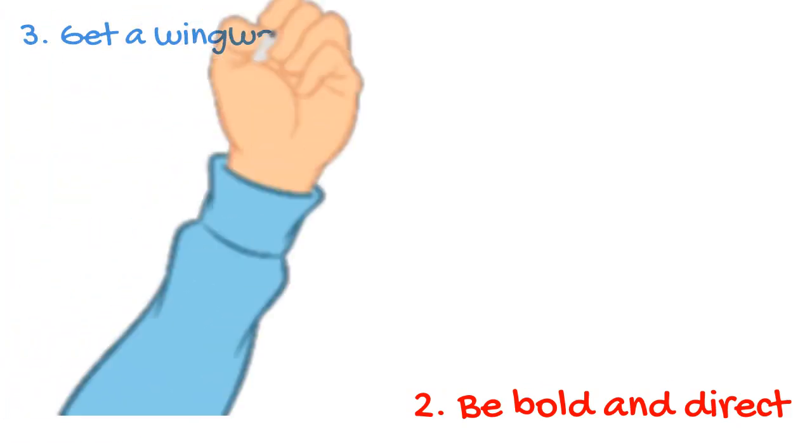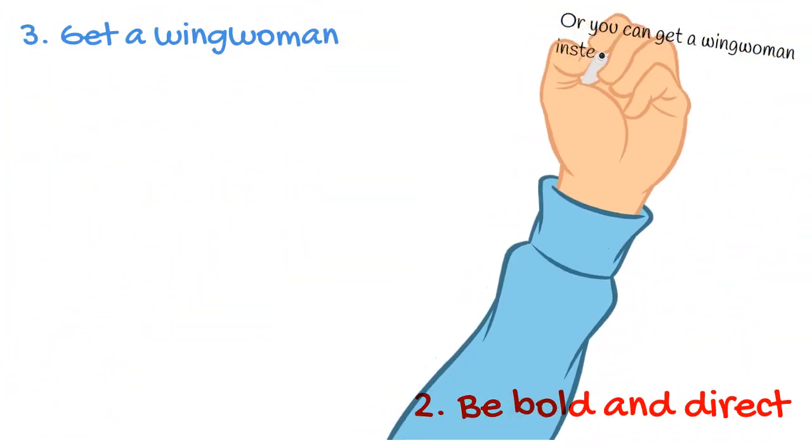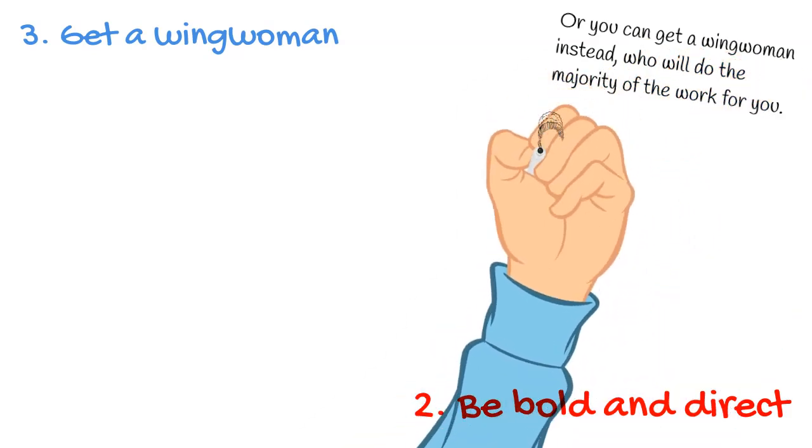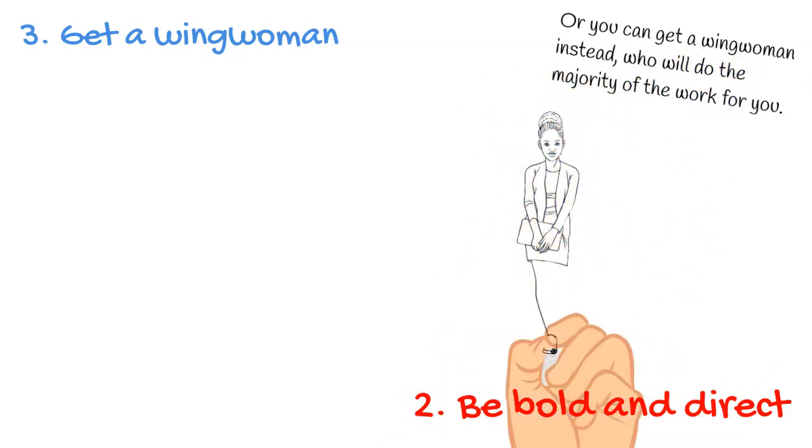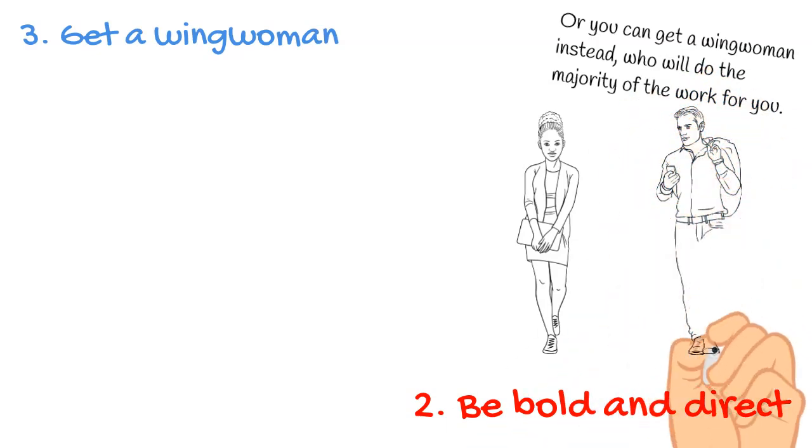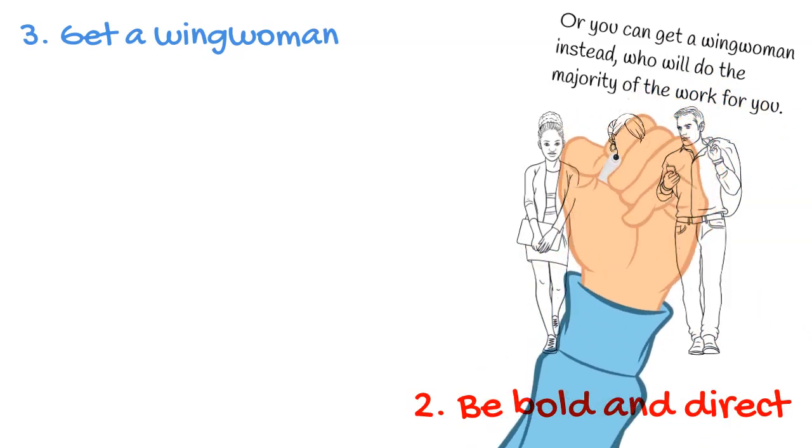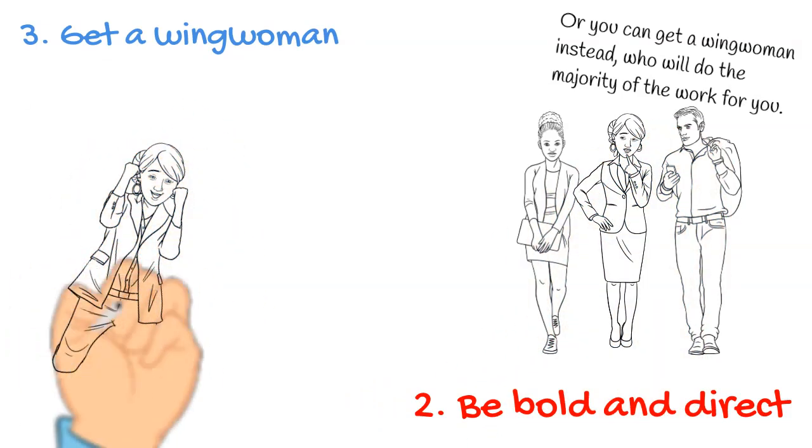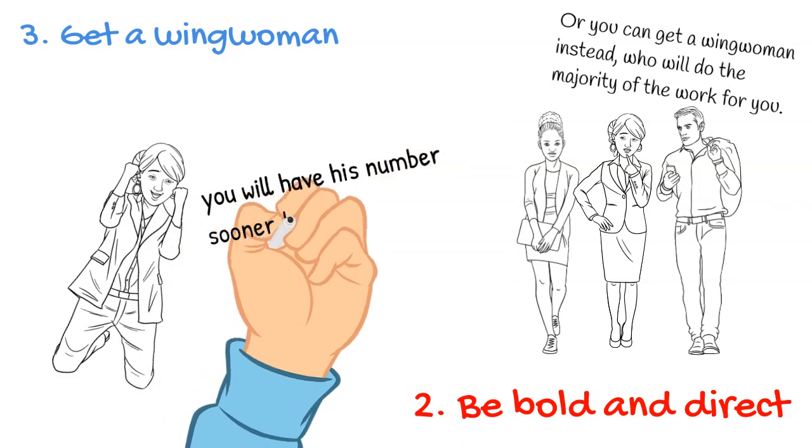Three: get a wing woman. You can get a wing woman who will do the majority of the work for you. A wing woman will let him know that you're interested and tell him lots of nice things about you that you wouldn't be able to say when you just met him, unless you want to appear narcissistic. If everything goes according to plan, you will have his number sooner than you were expecting.